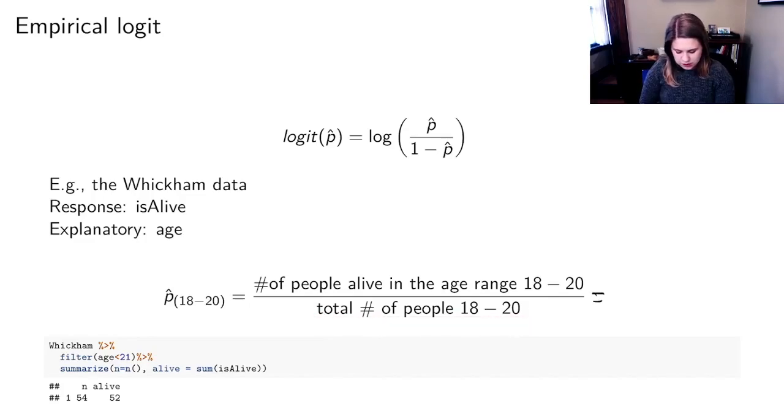I have some R code here. It looks like there were 52 people who were alive out of 54, and that's a 0.96 for that p-hat for that age range. So that is the observed proportion who were alive.